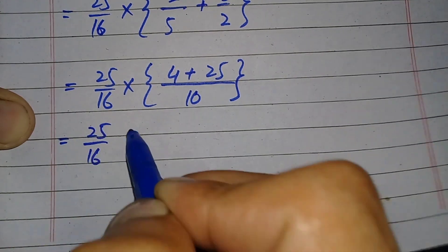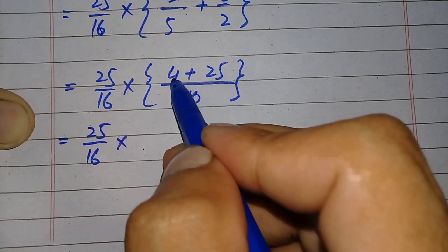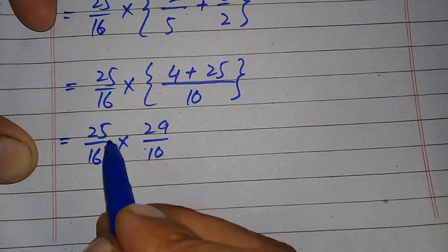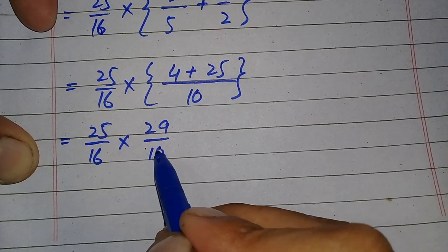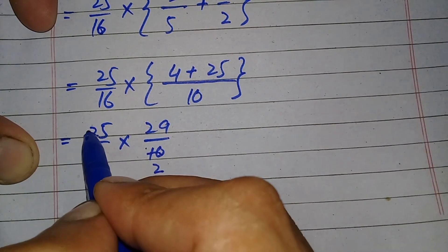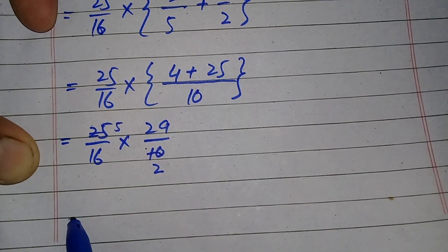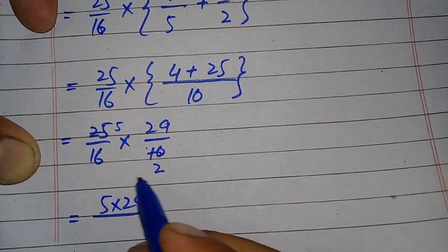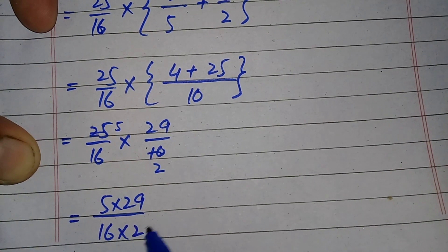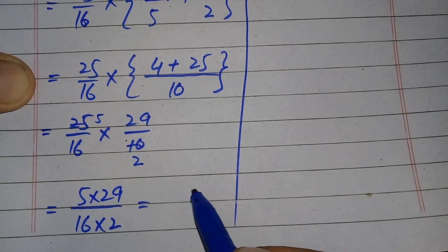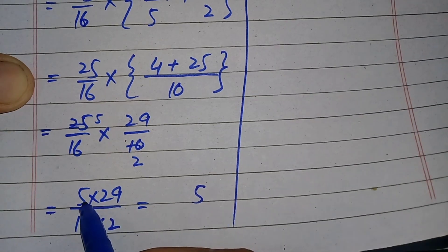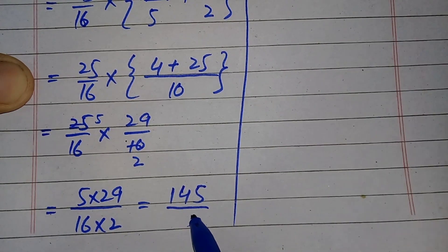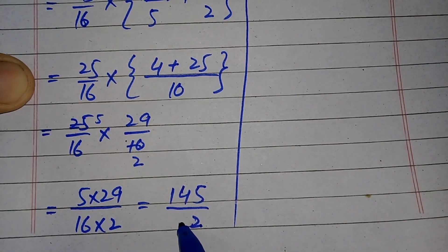25 by 16 multiply — 25 plus 4 gives 29 — so it becomes 29 divided by 10. In this step we multiply the two fractions. These numbers can be simplified by 5: 5 times 2 is 10 and 5 times 5 is 25. We then multiply 5 by 29 in the numerator and 16 by 2 in the denominator. So 9 times 5 is 45, carry 4; 2 times 5 is 10 plus 4 is 14, giving 145. And 6 times 2 is 12, carry 1; 1 times 2 is 2, plus 1 is 3, giving 32.